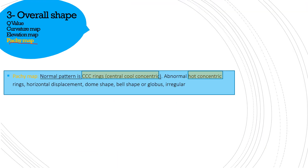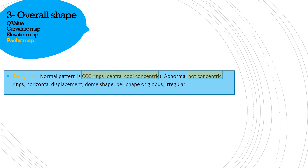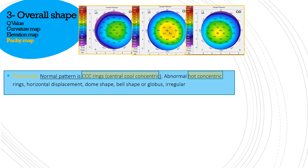The third map type is the pachymetry map. CCC rings — central cool concentric rings — are a normal pattern, while concentric rings that are hot in color are an abnormal pattern. Look at these photographs: these concentric rings are cool in color and central, so these CCC rings — central cool concentric rings — represent a normal pattern.